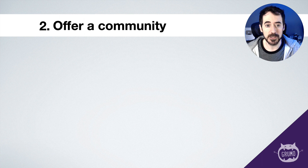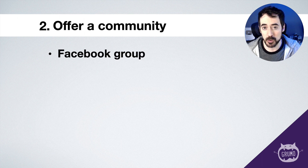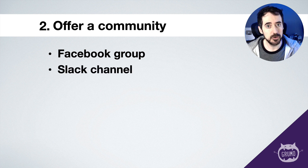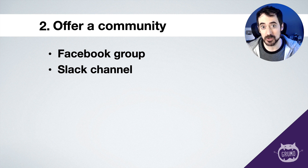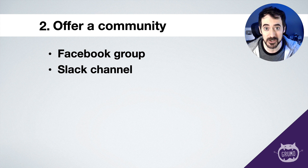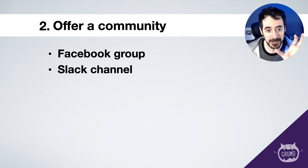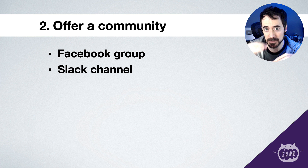How do you offer a community? The most typical way is through Facebook groups. The problem with Facebook is that although it's free, there's a lot of noise — it's a social media site and people could get distracted. You could have a Slack channel. I've heard it's great because you can create channels for each of your modules — for example, if you're teaching how to create online courses, you could have a channel specific for market research, one for marketing, one for how to launch your course, and one just to hang around and socialize. You can divide your community into specific topics.